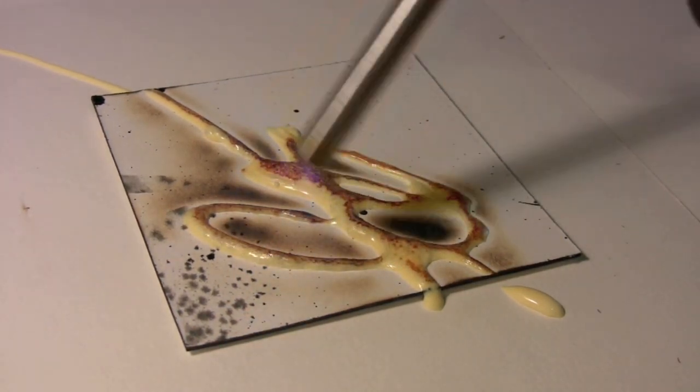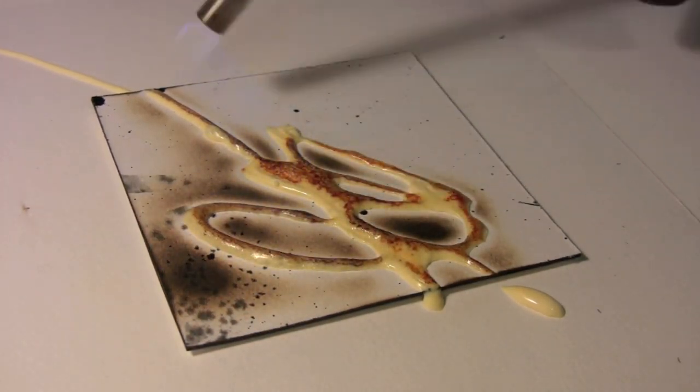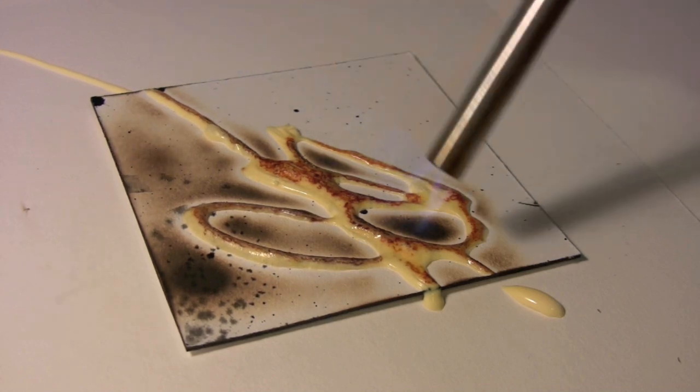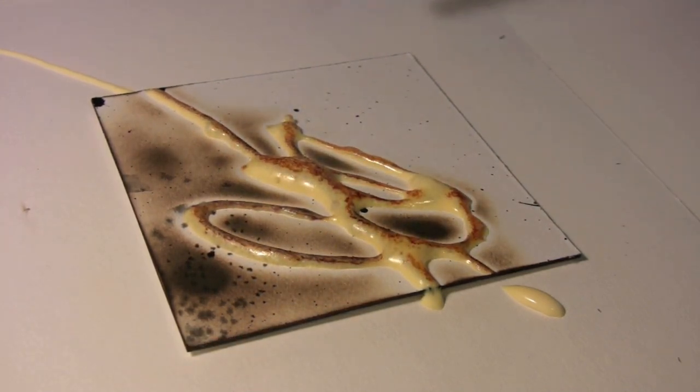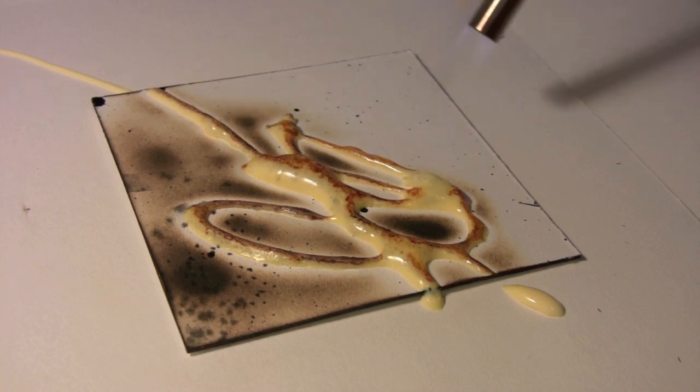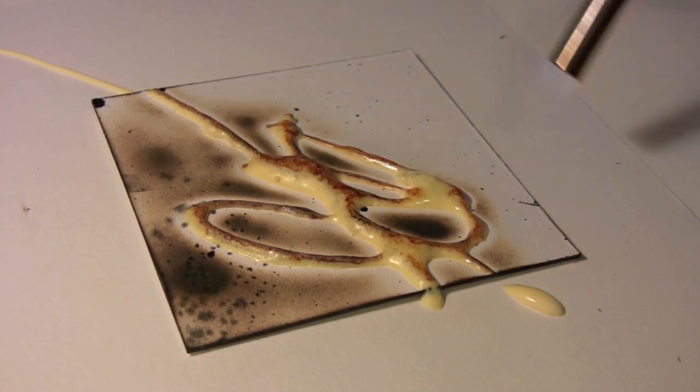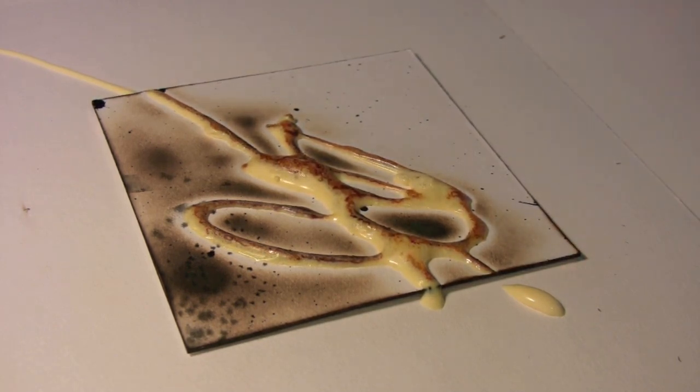To essentially torch the wood glue and what happens is you can see it bubbles and blisters and caramelizes in interesting ways. And of course all around your pattern or design, it's going to burn or singe the surrounding areas.